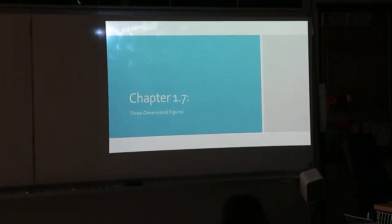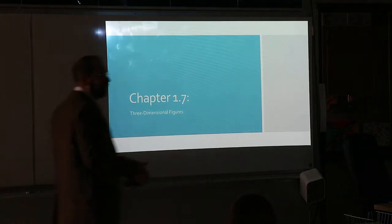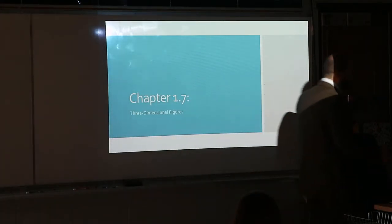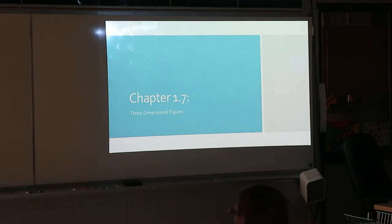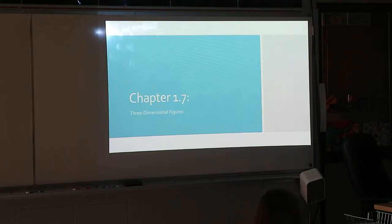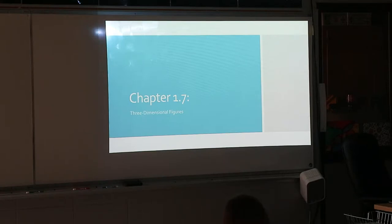Alright, we're going to take a few notes on this stuff today. Yesterday, if you were gone, we covered basically everything from three-dimensional objects — the basic names of the shapes. The only thing we didn't really go into very well was how to name a prism or a pyramid. We went through all the different platonic solids, those are the very special types of polyhedra, three-dimensional objects.